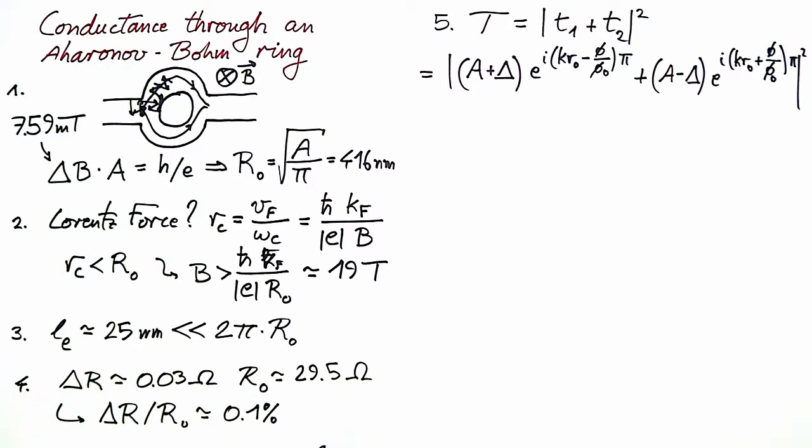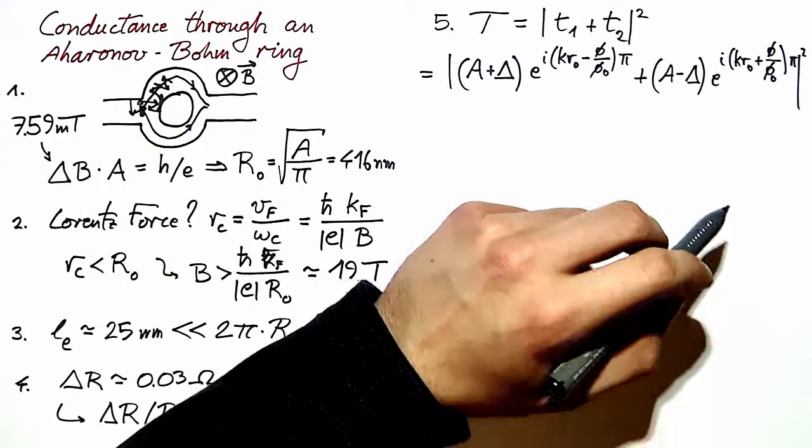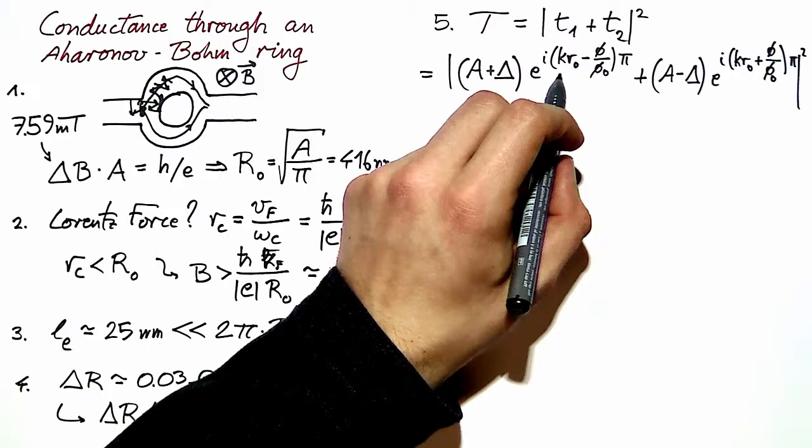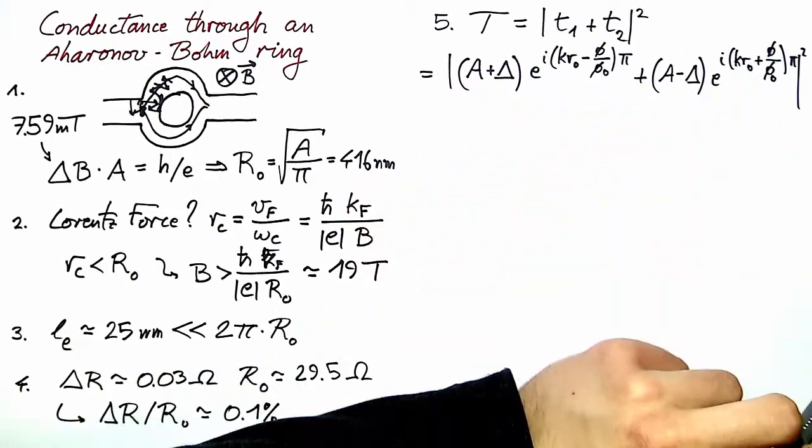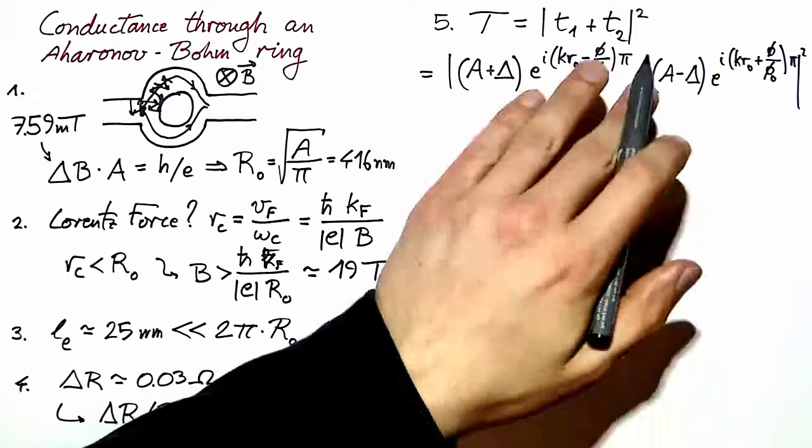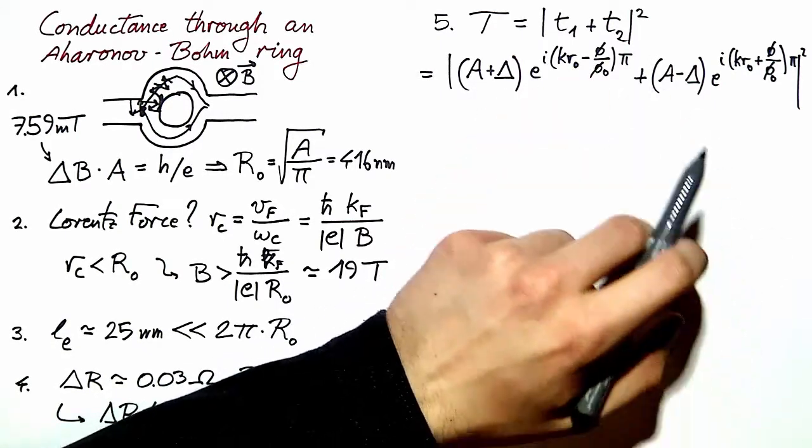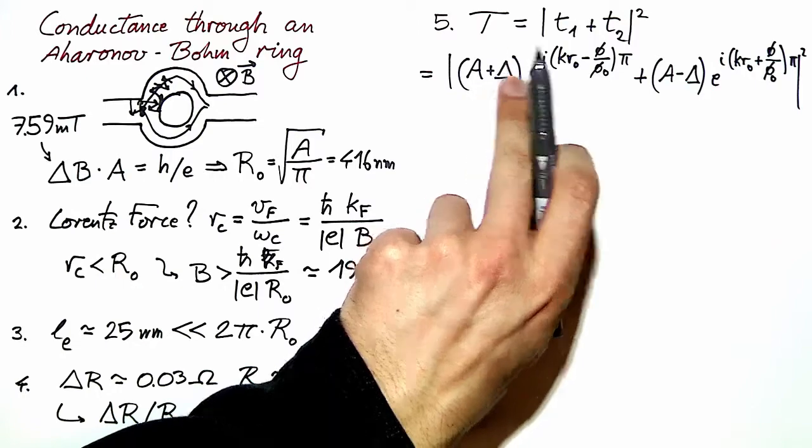To evaluate this expression, we can notice that there is a common factor e to the power i times k r₀, which has a norm of 1, so we can just discard it, and we can collect the terms multiplying A and Δ.